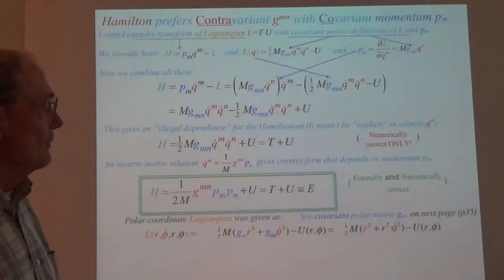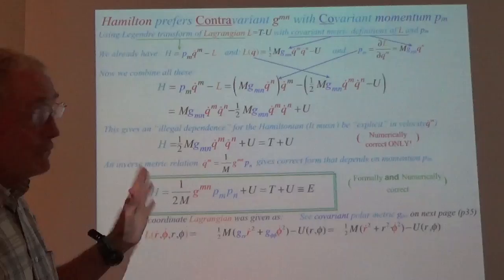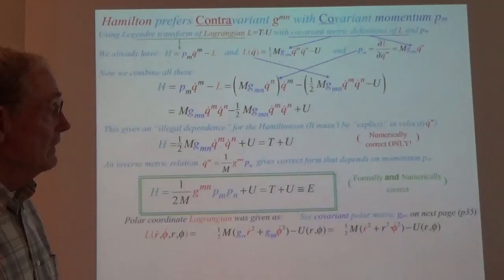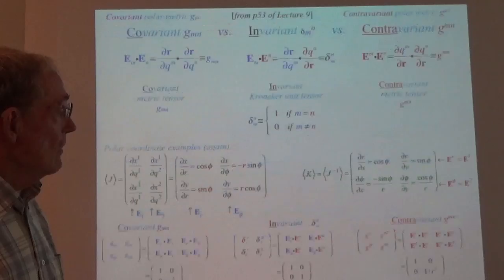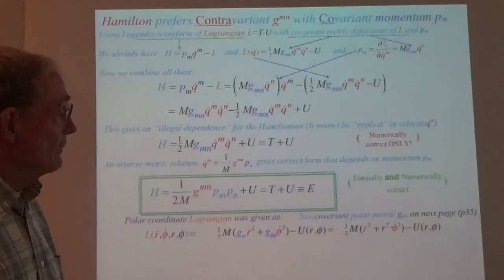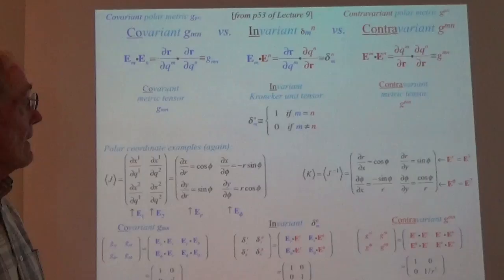The first advantage I have to emphasize is that the Hamiltonian, if we don't have any explicit time dependence, is conserved — energy is conserved. So that's a good thing. Let's look at those metrics again: this is the covariant one, where you took the partial derivative of the position vector with respect to a generalized curvilinear coordinate component M, and then N.